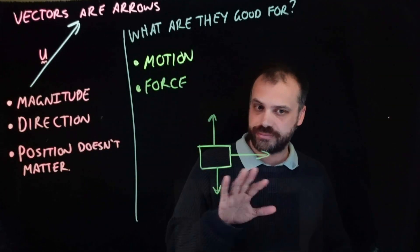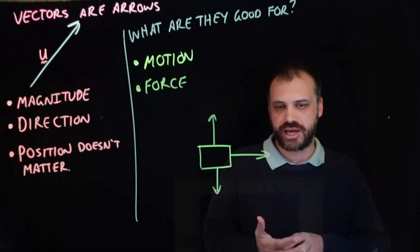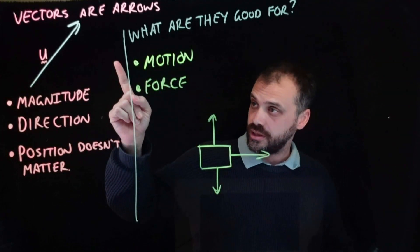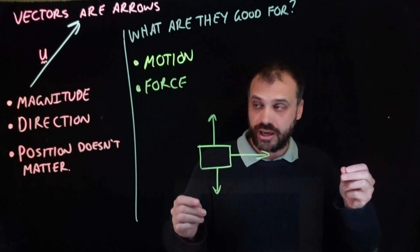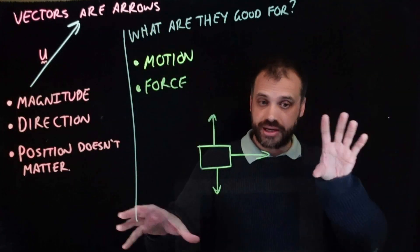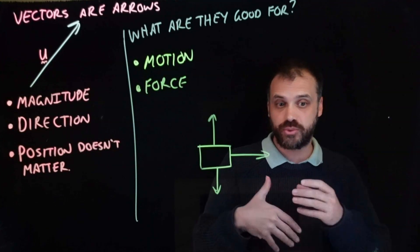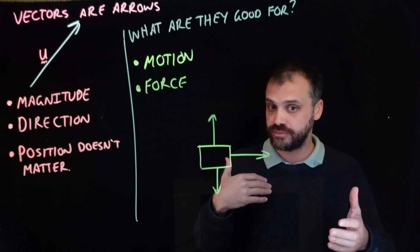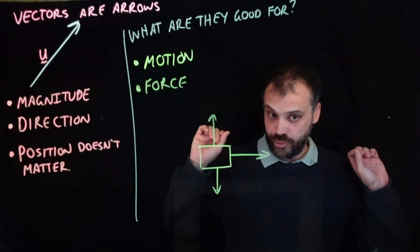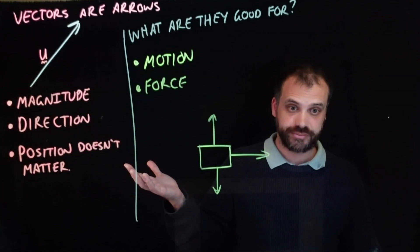So we're going to wrap the video up here. The only things you need to take away are: vectors are arrows, they have a length and a direction. We don't care where they are — we can move them around as much as we like and they're still the same vector. And they're really, really good at describing the world.